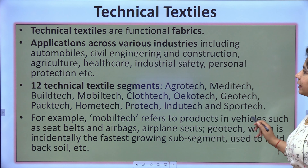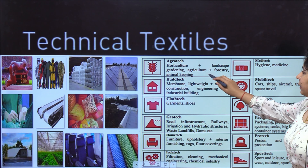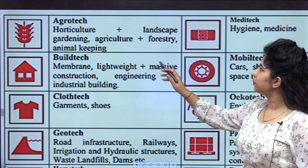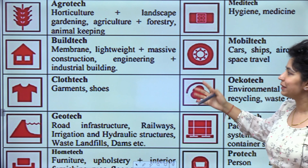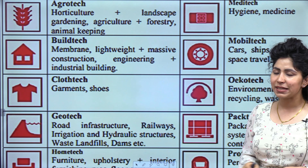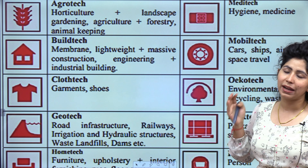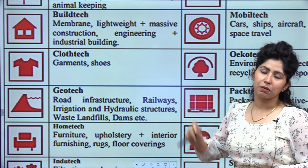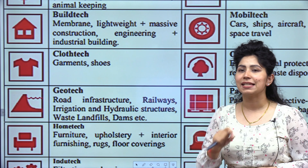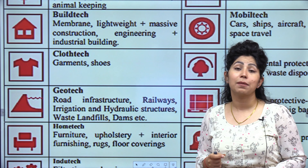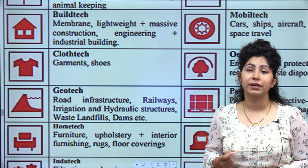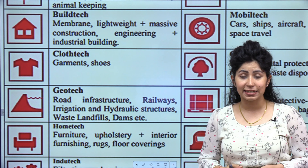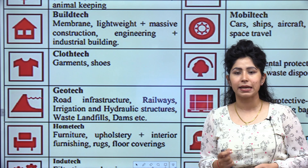Geotech has quite a wide range of uses. Let me zoom in so you can see: Agrotech covers horticulture, landscape, gardening, agriculture, forestry, and animal keeping. Basically, all the new materials coming — whether in agriculture, buildings, clothing, garments, or shoes — are technical textiles. For example, shirts that give UV protection or sweat-free shirts available from many brands — all of these are technical textiles.